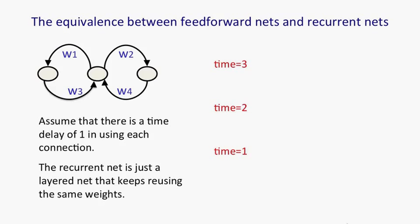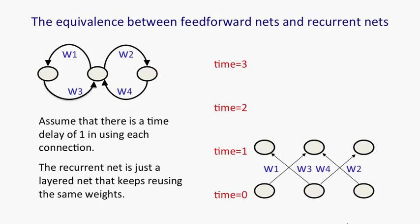So the recurrent network starts off in some initial state, shown at the bottom there at time zero, and then it uses the weights on its connections to get a new state, shown at time one.